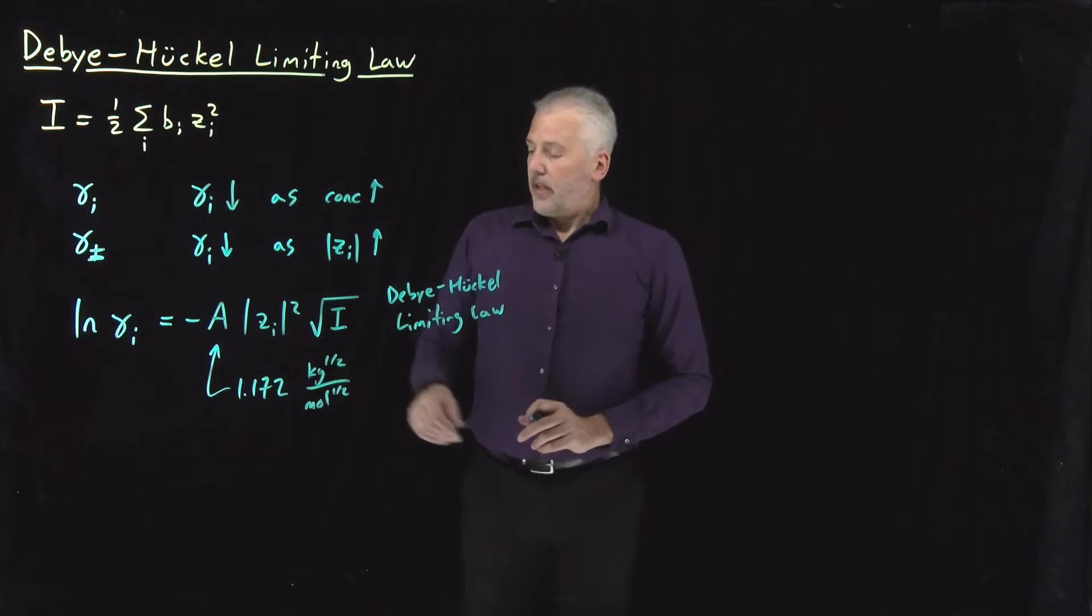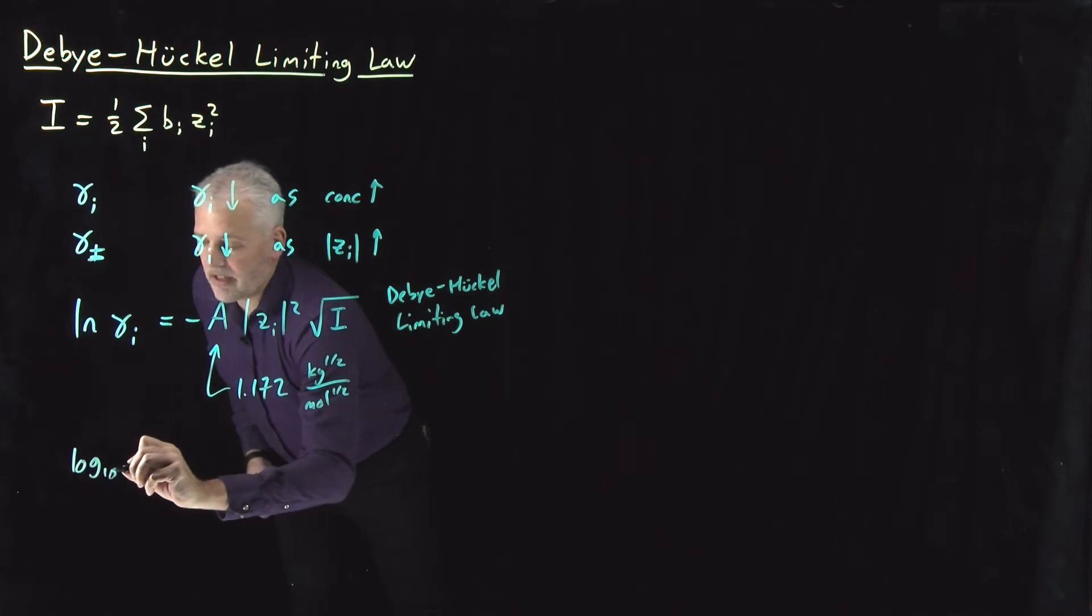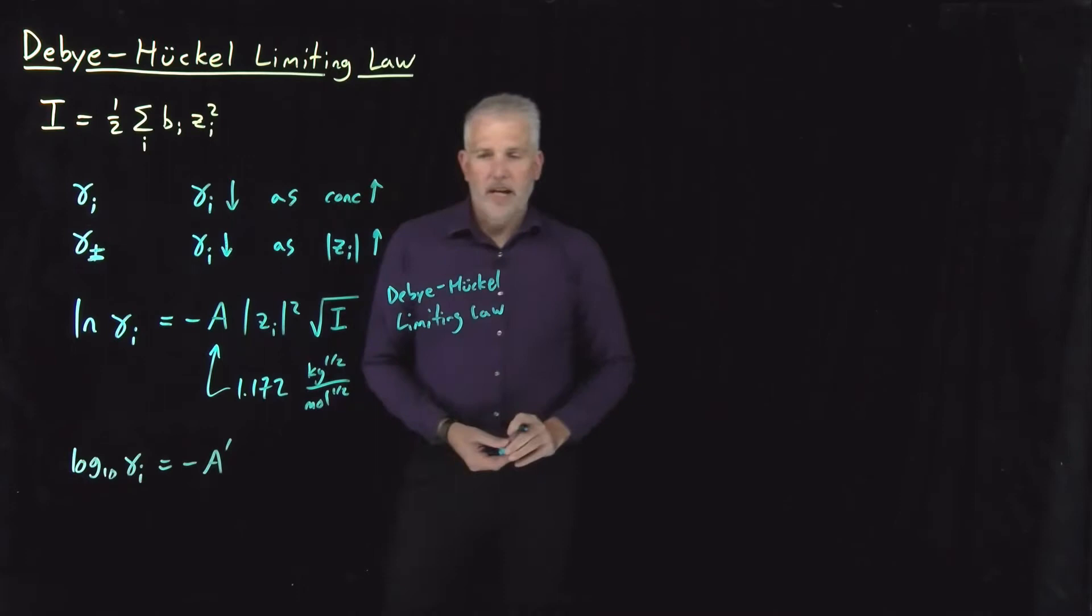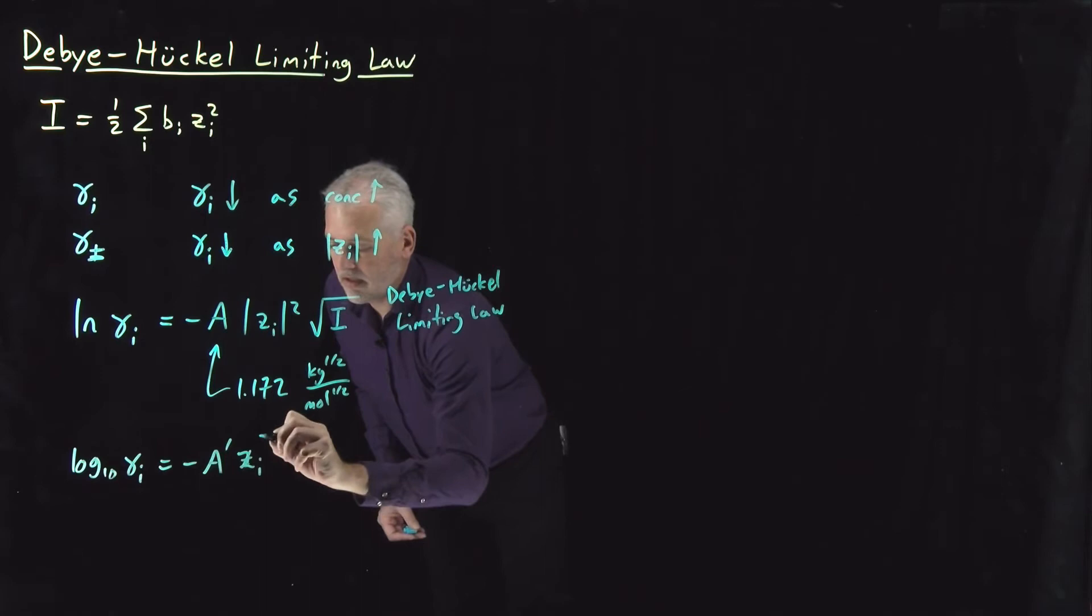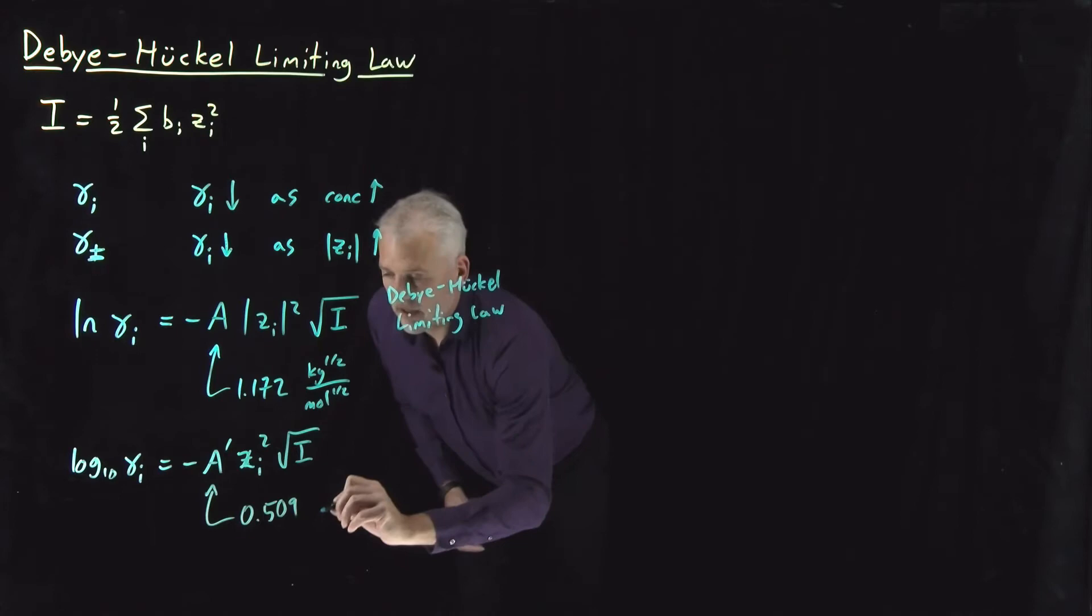It's also common to see this expression written in terms of a common log, a base 10 log, rather than a natural log. If you do prefer to use that expression as a base 10 logarithm, I'll write that one with an a prime for that constant. That constant, if you're using base 10 log, is of course related to this constant. If I divide this by the natural log of 10, I'll get this value 0.509.